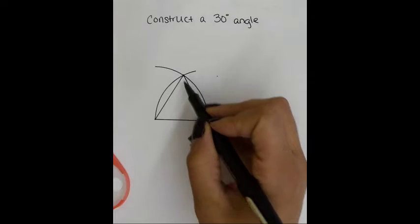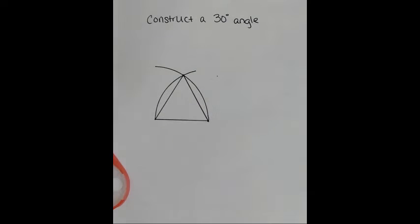In an equilateral triangle, all three angles are 60 degrees. So in order to construct a 30 degree angle, we now need to construct an angle bisector.